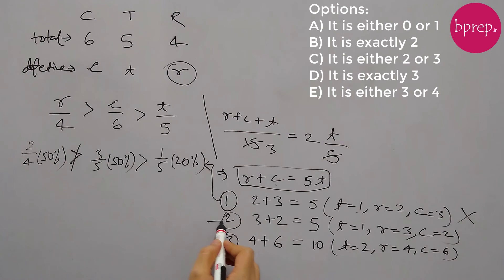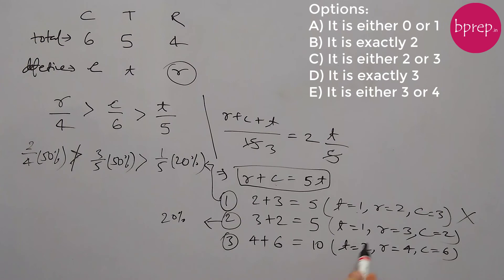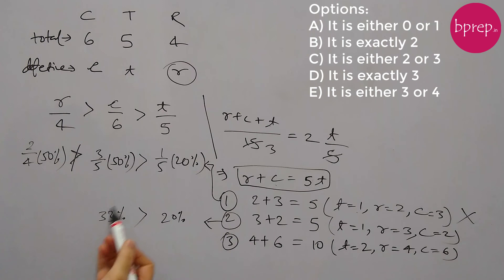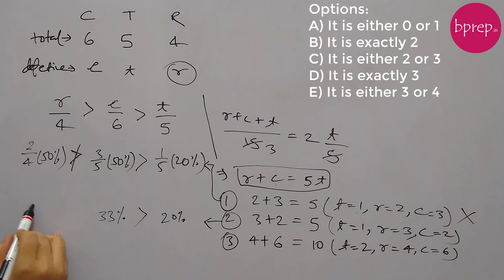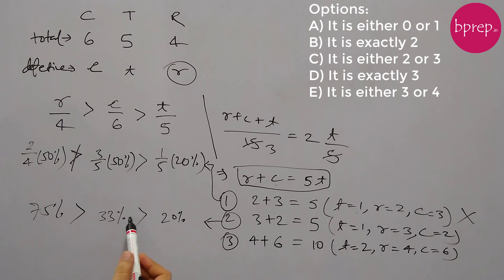Now let's validate the second set: t equals 1, r equals 3, c equals 2. Again, t by 5 is 20%. C is 2, so 2 by 6 is approximately 33% — this is greater than 20%, so that condition is satisfied. And r is 3, so 3 by 4 is 75%. This set satisfies both conditions, so this is a possible answer.